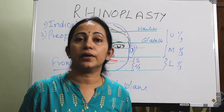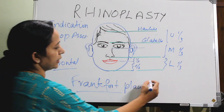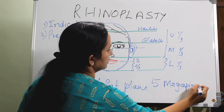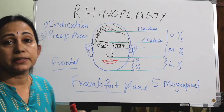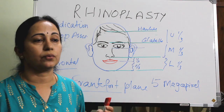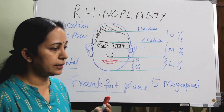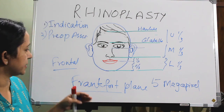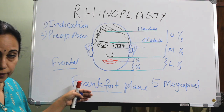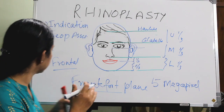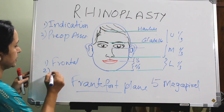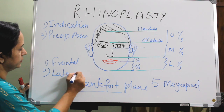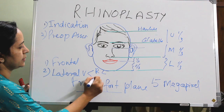Standard 35mm photographs are taken with at least a 5-megapixel camera with an independent flashlight, which is ideal for preoperative assessment of rhinoplasty. The views to be taken are: frontal in the Frankfurt plane, right lateral, and left lateral.